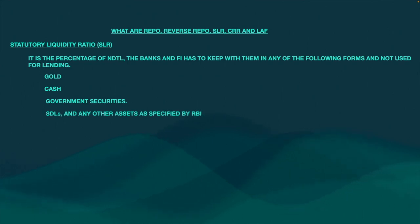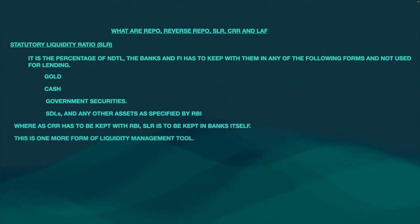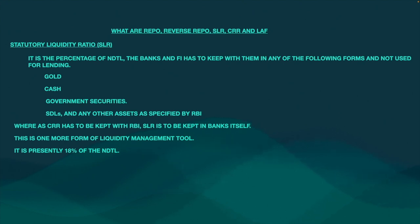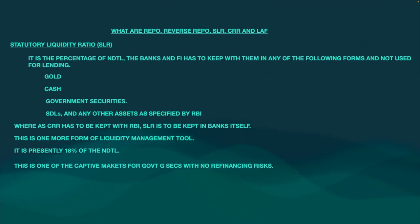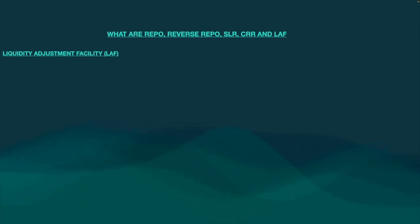CRR has to be kept with RBI whereas SLR has to be kept in the banks itself. This is another form of liquidity management tool by the RBI. It is presently 18% of the NDTL, so 18% of the net demand and time liabilities should be kept in the form of either gold, cash, or government security and should not be used for lending. This SLR is considered a captive market for the government — most banks keep SLR in government securities since they generate some return, making it a captive market. When the government needs more money, they can just increase the SLR.